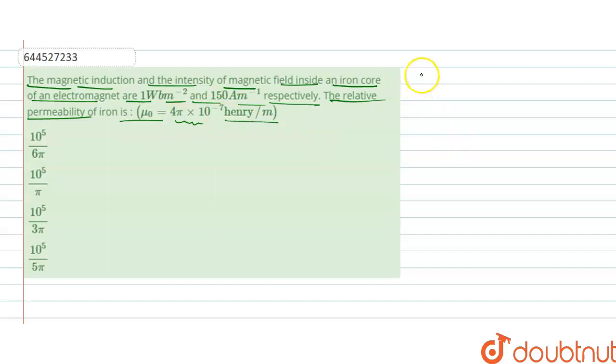We know that the formula B = μᵣ μ₀ H. And μᵣ = B / (μ₀ H). Simply we find out the relation.